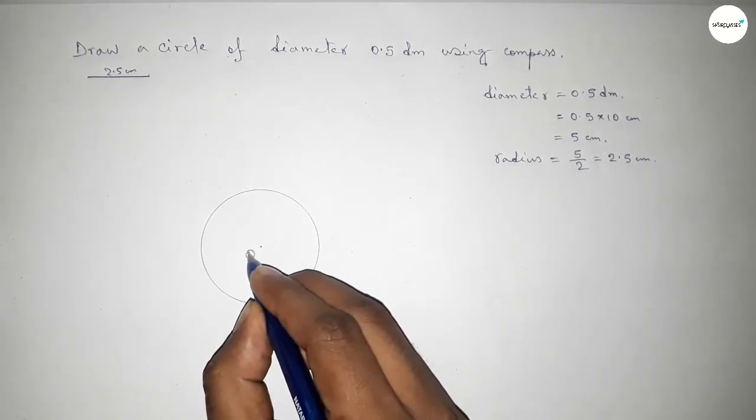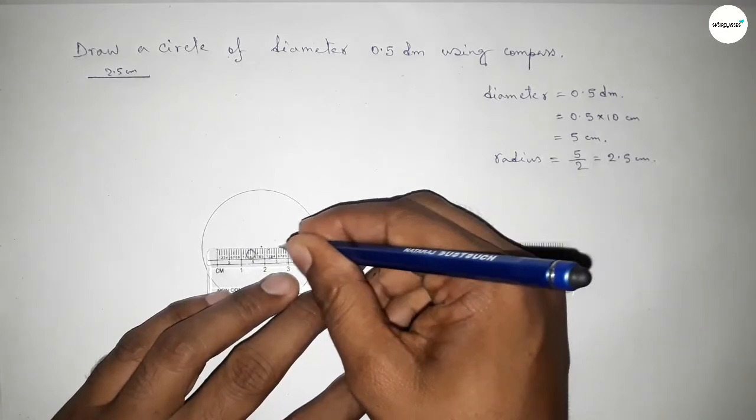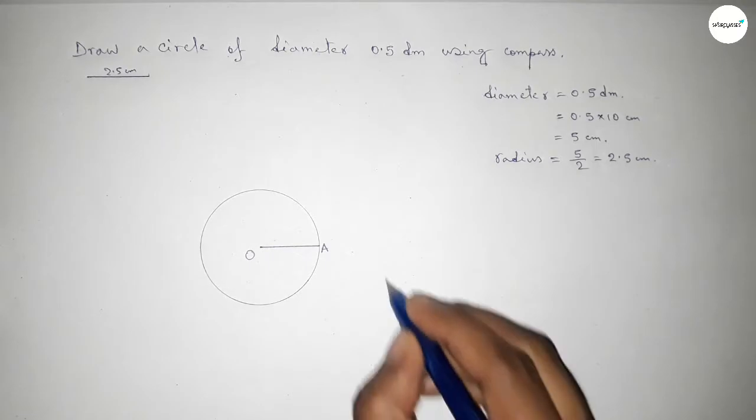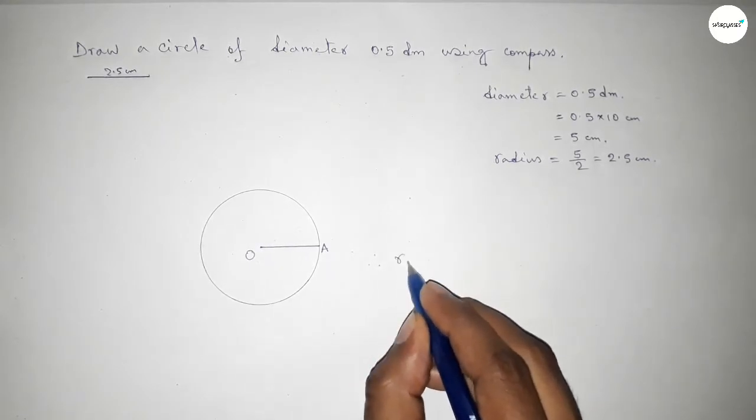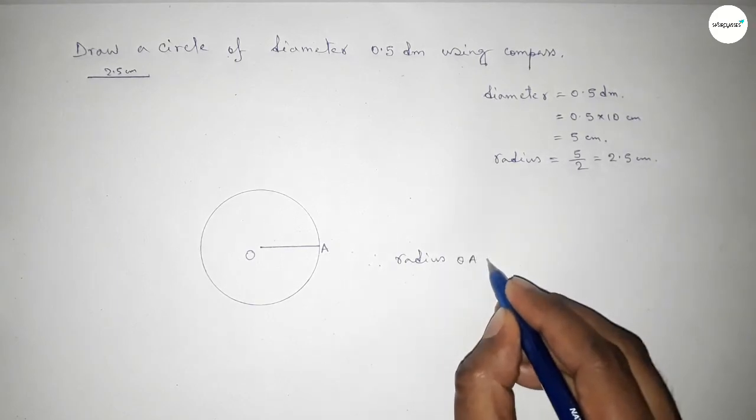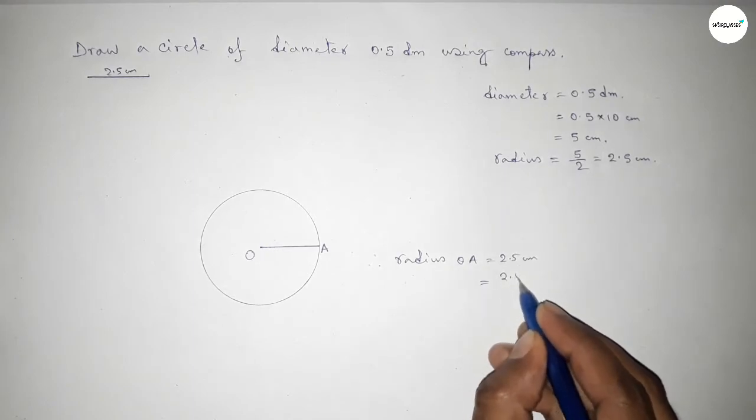Here is the center of the circle, so we mark point O. Now joining this line gives us the radius of the circle. We mark point A, so radius OA equals 2.5 centimeter.